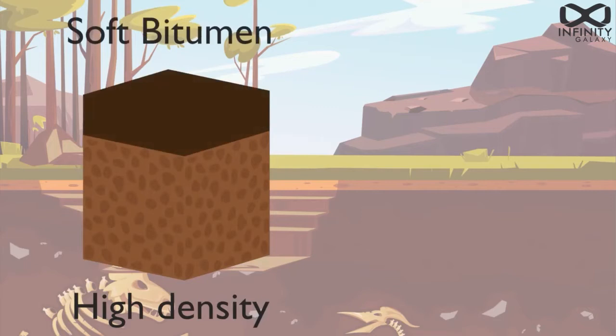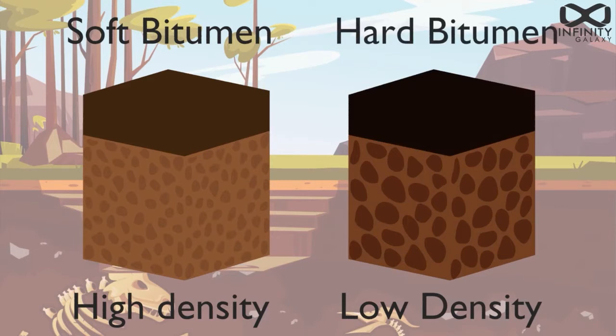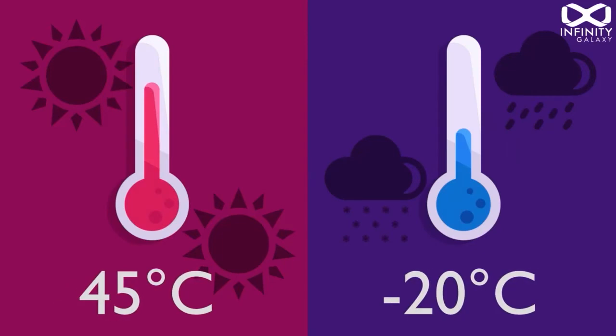On the other hand, high penetration graded bitumen works better for soils with low particle density. Air temperature is another crucial factor when selecting penetration grade.